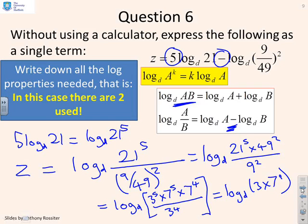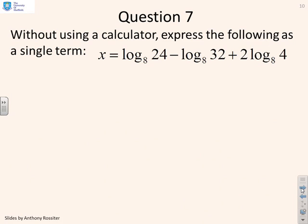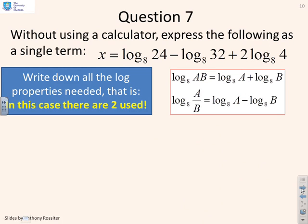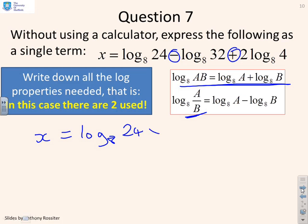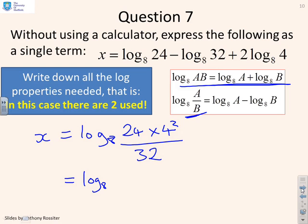Another question — without using a calculator, express the following as a single term. All it's really testing is the product rule, that the log of a product is the sum of the logs, or the quotient rule, that the log of a quotient you subtract the two logs. There's a minus on the 32 and a plus on 2 log 4, which is the same as log of 4 squared. So by inspection x equals log 8 of 24 times 4 squared divided by 32. Simplifying: log 8 of 3 times 8 times 4 squared all divided by 4 times 8, which gives log 8 of 12.